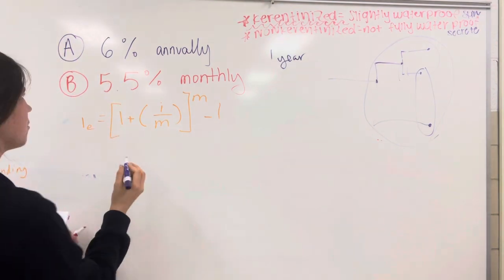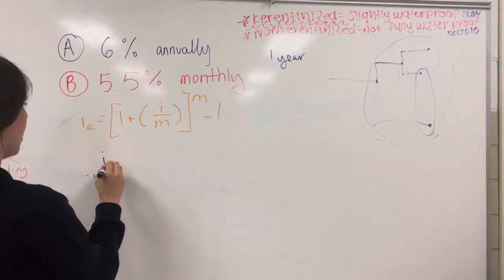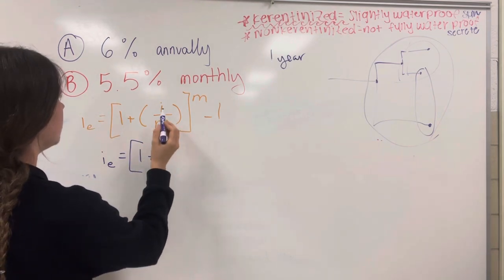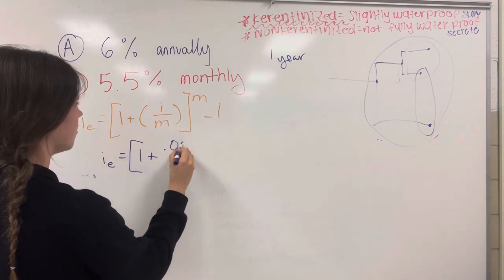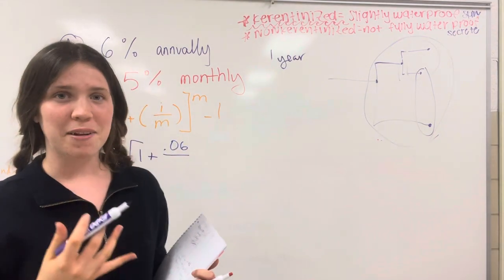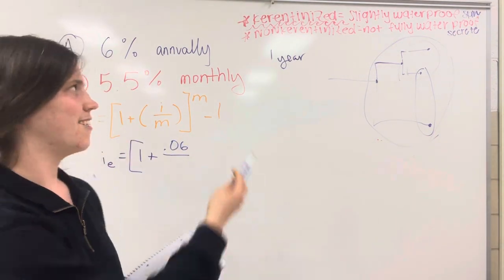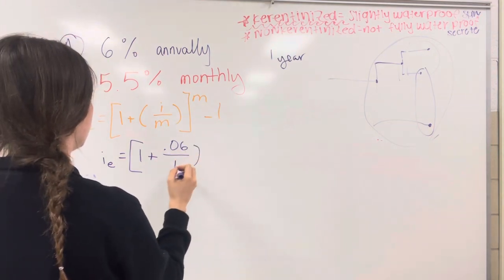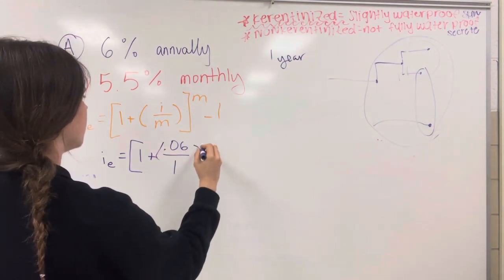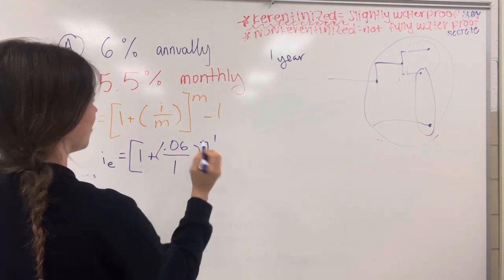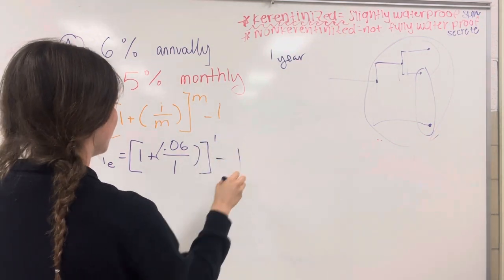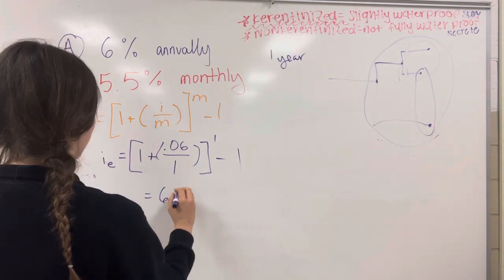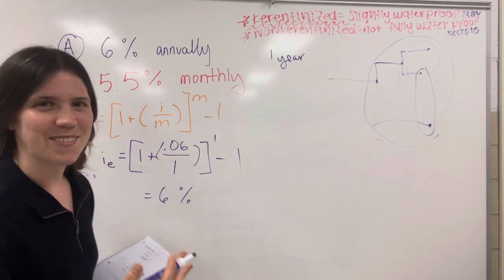So here we go. Let's do 6% first. We're going to go IE equals 1 plus 0.06 divided by m, where m is how many compounding periods we have in a year. So this one is just 1, divide by 1, and then to the first. There we go. And that's going to turn out to be 6% as you could probably guess.